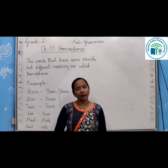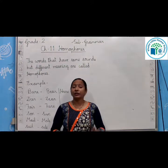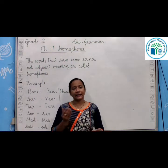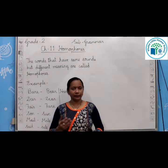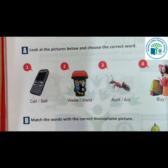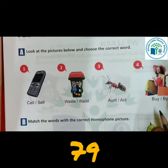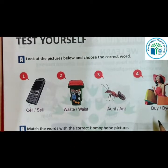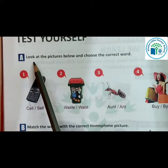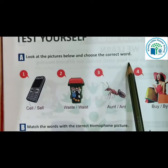Ab aapko achhe se samajh aa gayi na homophones ka matlab kya hai? Now, in your textbook there are some exercises. Jisme pictures hain aur unki words diye gaye hain — so aapko picture ke anusar sahi homophones ko chunna hai. Let us do the exercise from our grammar book. This is our exercise from the textbook on page number 79. We have studied what homophones are — now let us do Exercise A. Look at the pictures below and choose the correct word.